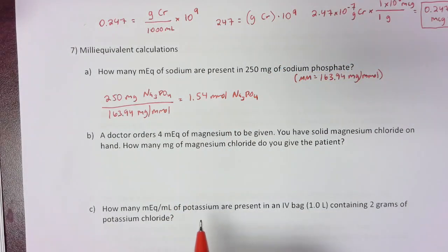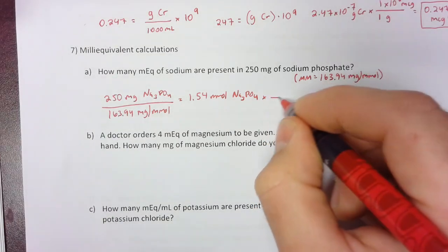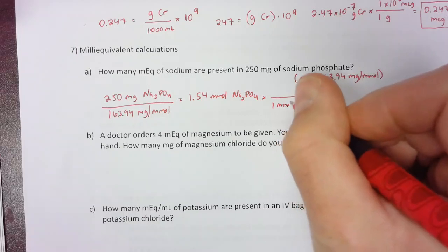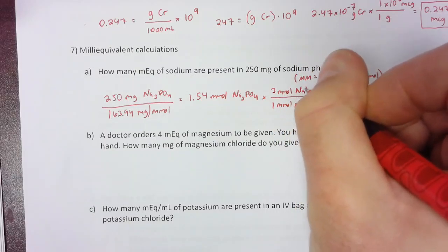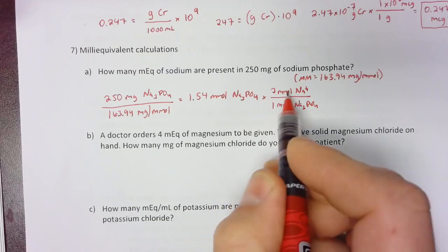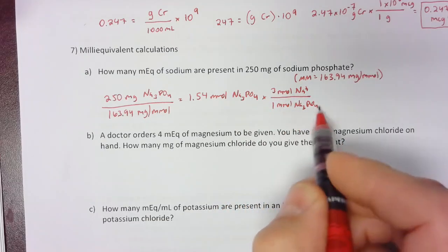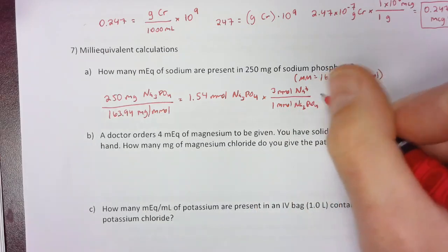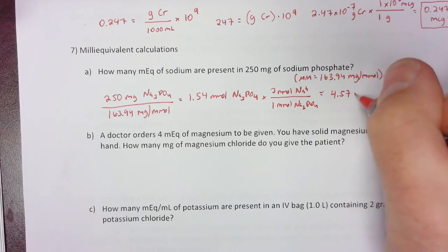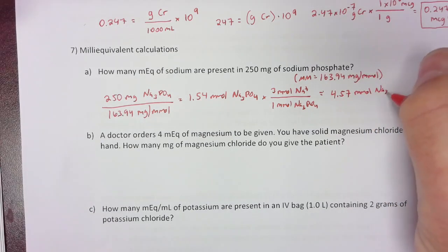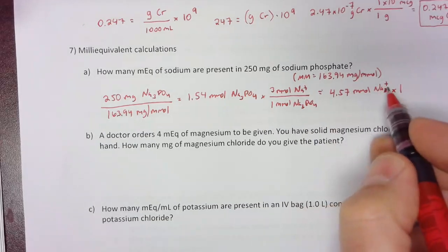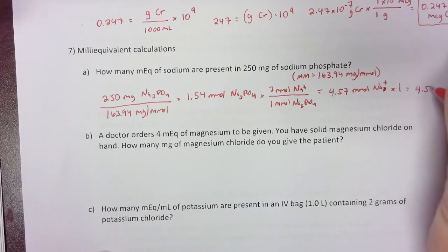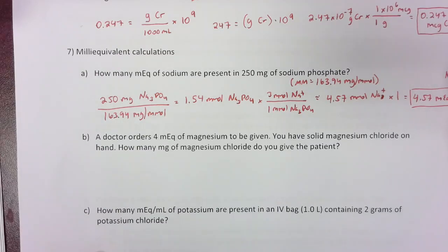Next, convert millimoles of sodium phosphate to millimoles of sodium. There are 3 millimoles of sodium for every 1 millimole of sodium phosphate, giving 4.57 millimoles of Na⁺. Then multiply by the charge, which is 1+ for sodium, so the final answer is 4.57 milliequivalents of sodium⁺.